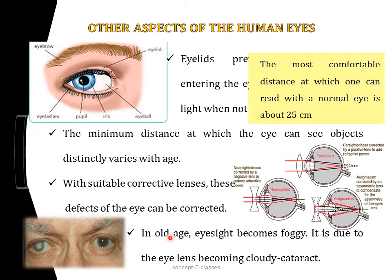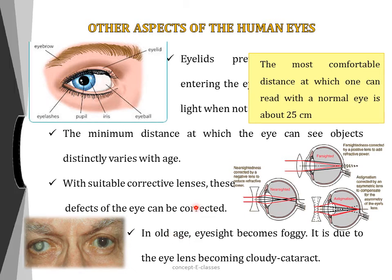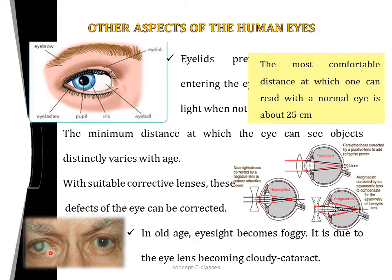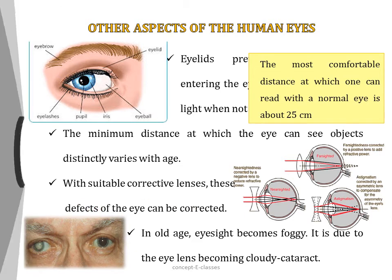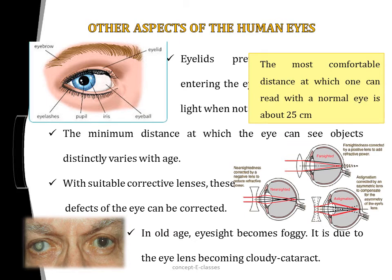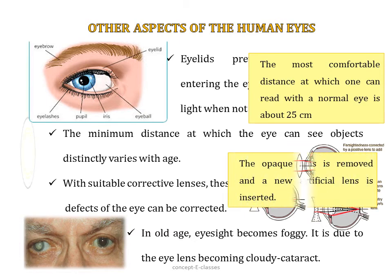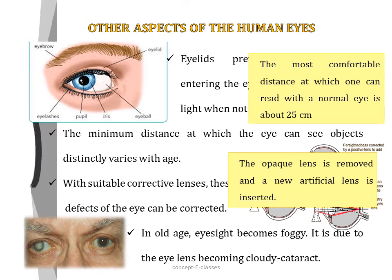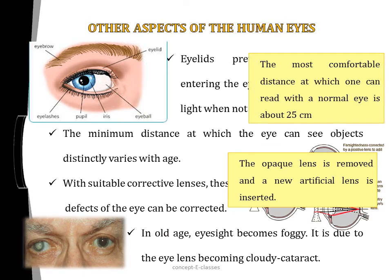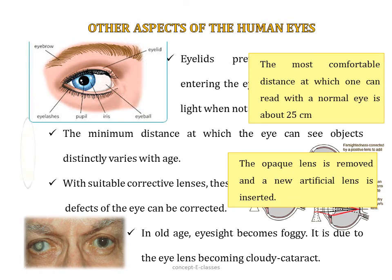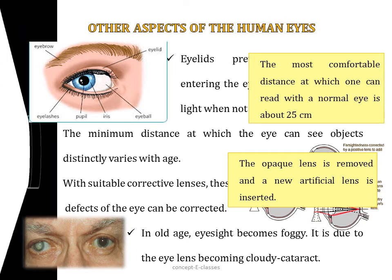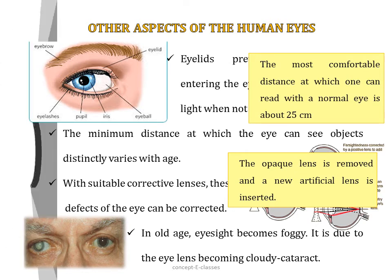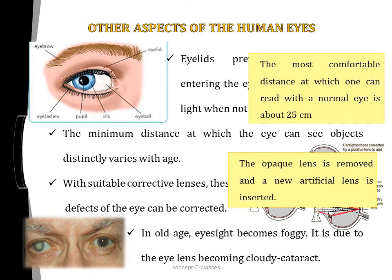Sometimes in old age, the eye lens becomes cloudy — this condition is called cataract, which causes loss of vision and can become extremely severe. It can be treated by replacing the opaque lens with a new artificial lens. So we have covered the different parts of the eye, other aspects of human eyes, and common vision defects.